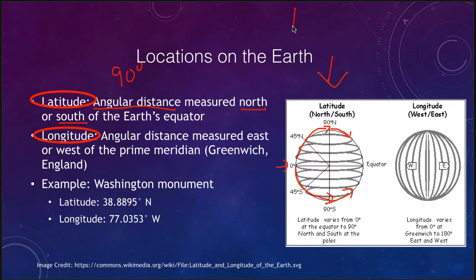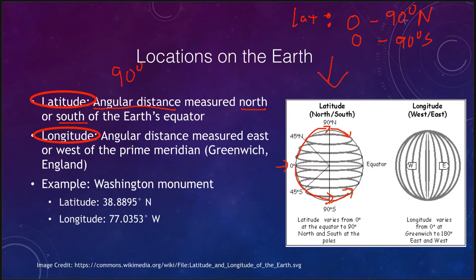So it has a maximum latitude of 90 degrees. The latitude will range from zero to 90 degrees north, and zero to 90 degrees south if we're looking at the south pole. It will always be between zero and 90 degrees — you will never have anything greater than that.